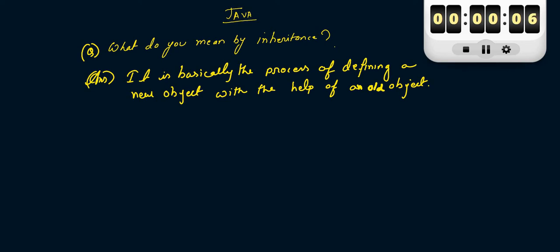What is basically inheritance in Java? It is basically the process of defining a new object which is defined with respect to the old object.